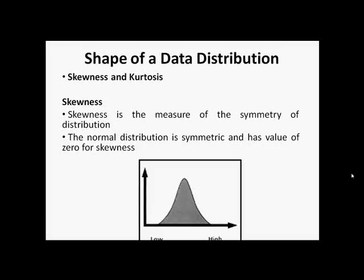Hello and welcome. In this video clip we will learn about the parameters that define the shape of a data distribution. Commonly two parameters are used to define the shape of a distribution, and those two parameters are skewness and kurtosis.